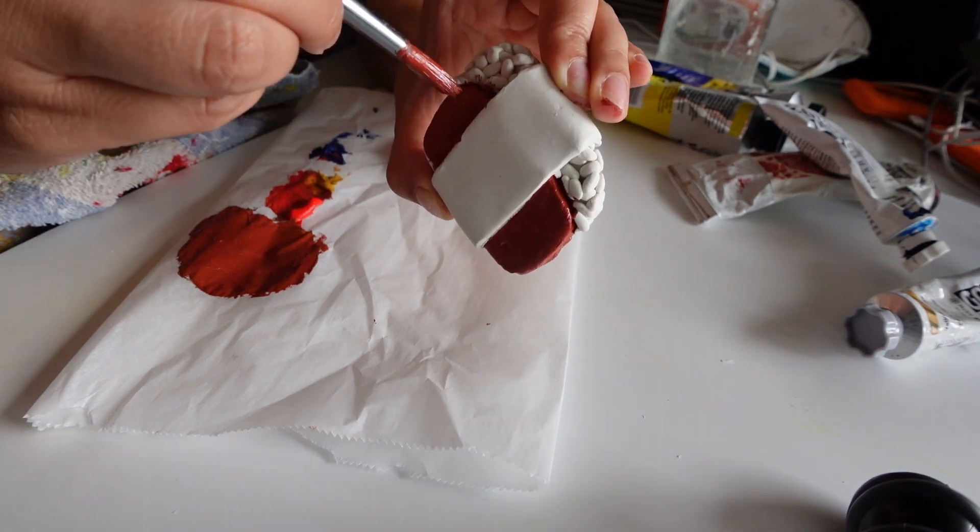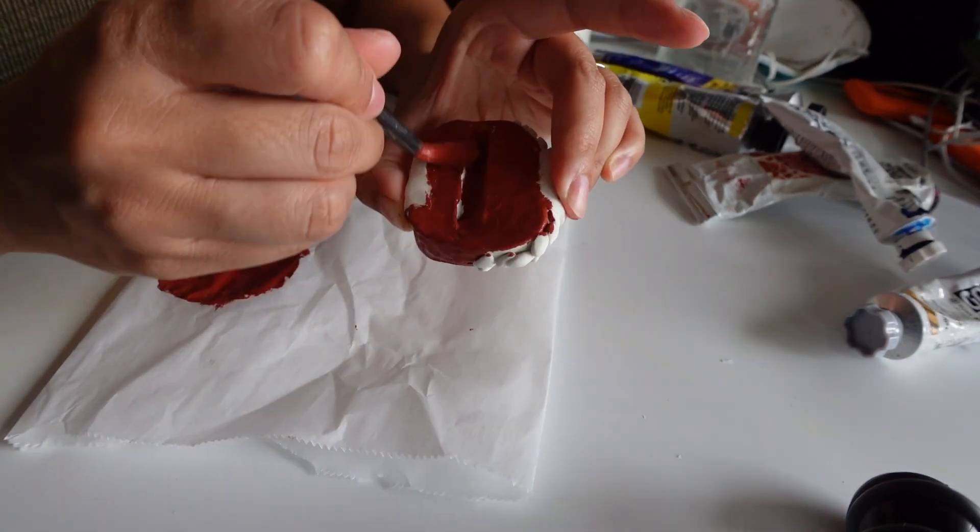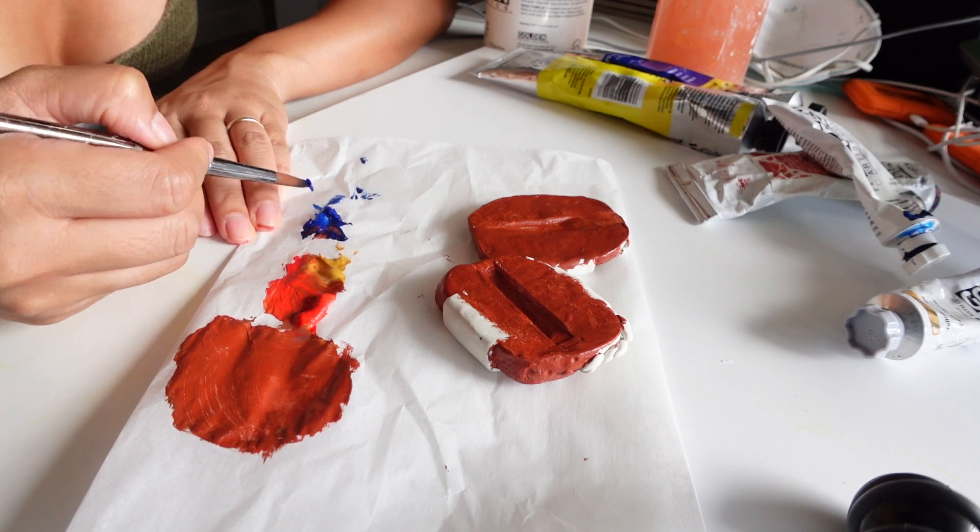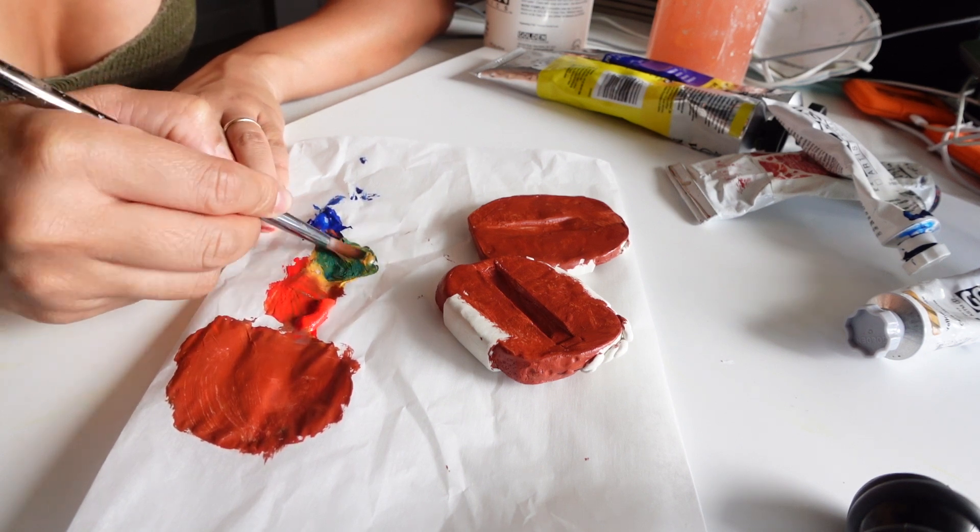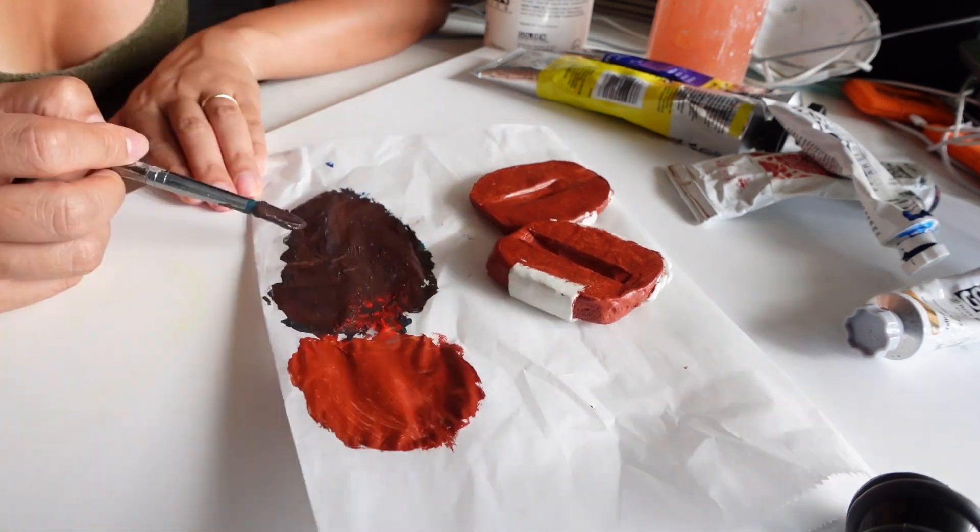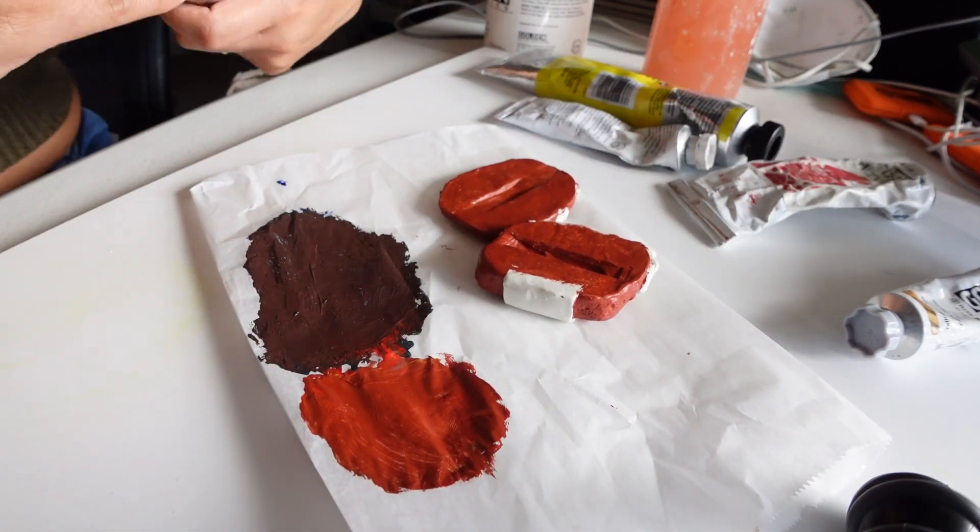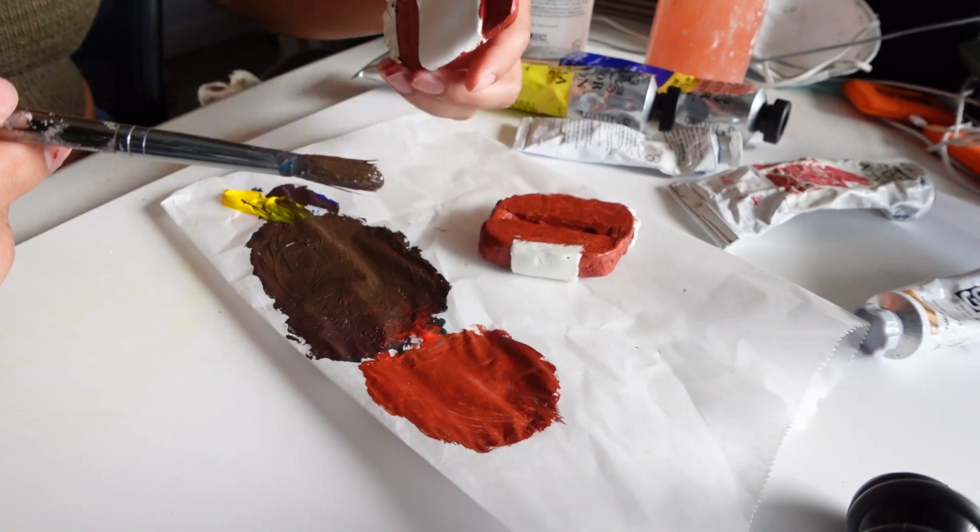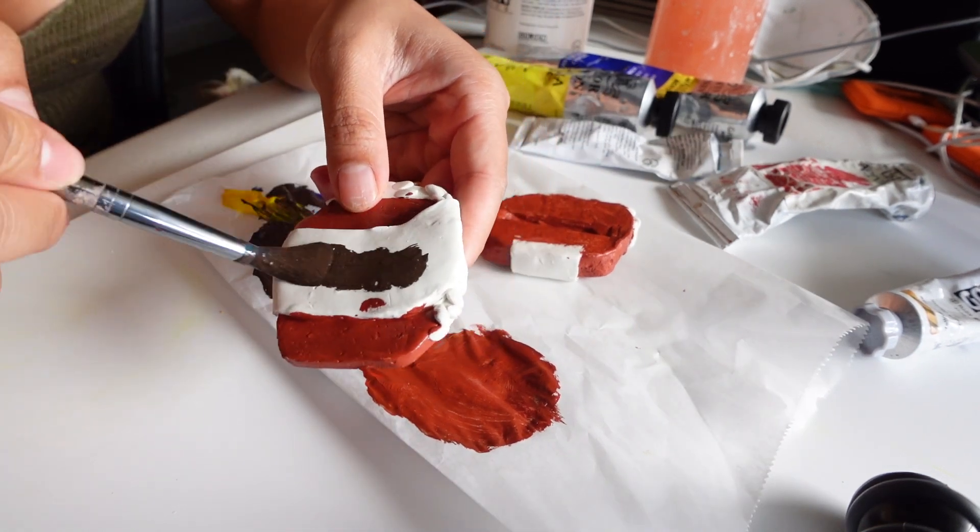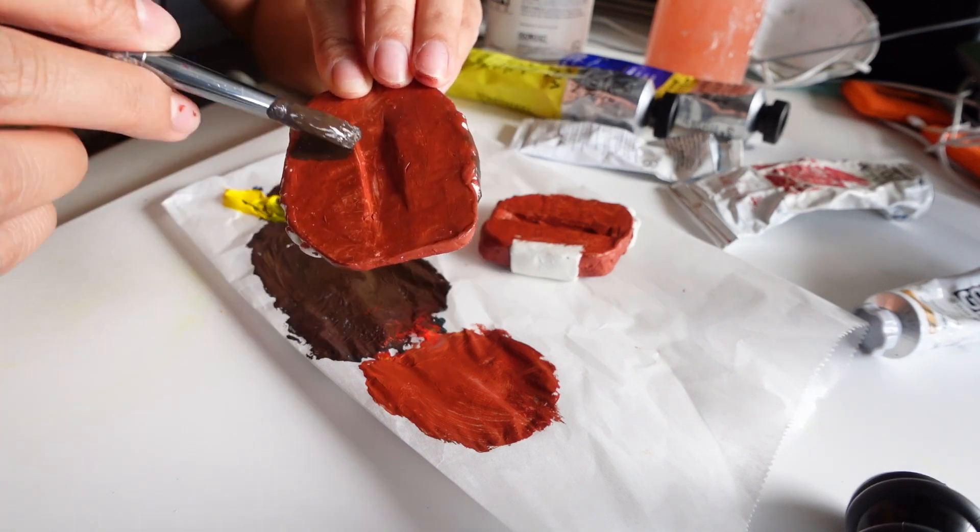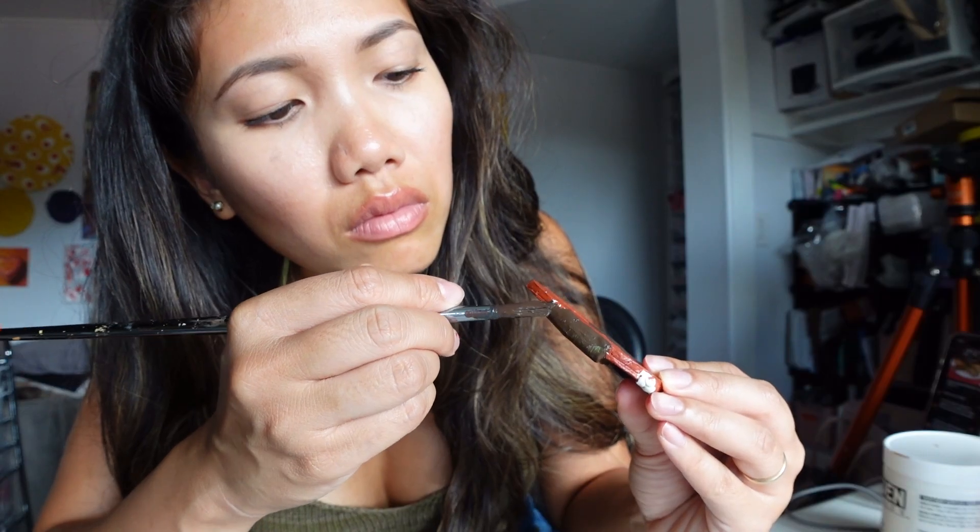And I, looking back, I wish I would have gotten different colors of clay, you know, like primary colors, and actually just used that to make the actual color of the nori sheet, make the actual color of the spam, and use the white only for the rice, just so I didn't have to do this painting process. But it's okay. It's all part of the learning process.